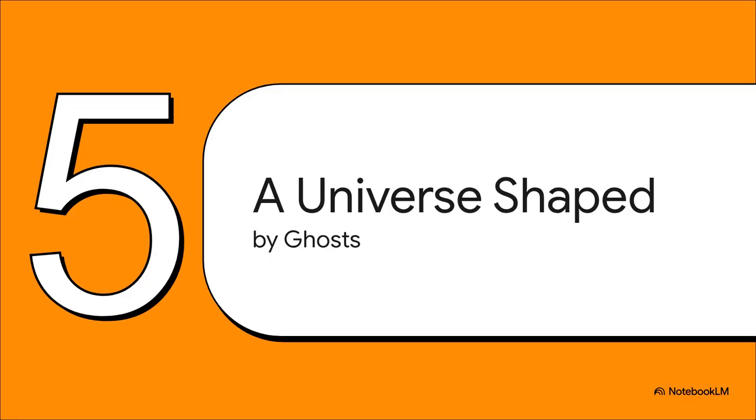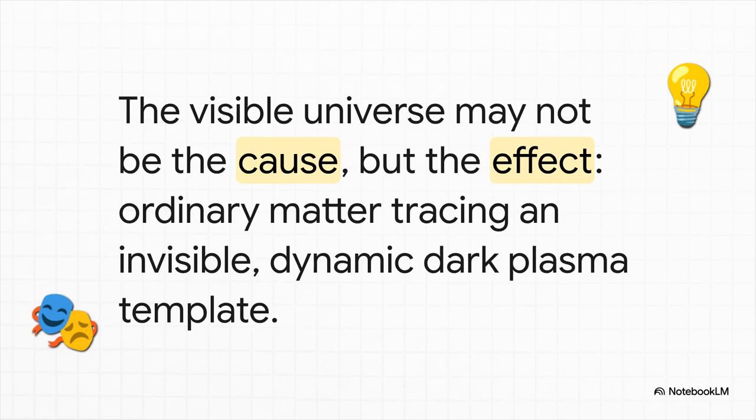It just works. So when you put all of these pieces together, the implication of J. Alfred's theory is profound. It suggests we need to fundamentally rethink what we're looking at when we gaze out at the cosmos. And this leads us to the theory's most powerful takeaway. What we see as galaxies and filaments and cosmic structures, they might not be the cause of the universe's structure, but merely the effect. They are just the visible matter, like sprinkles of glitter, tracing the contours of a much larger, more dynamic, and completely invisible dark plasma universe.